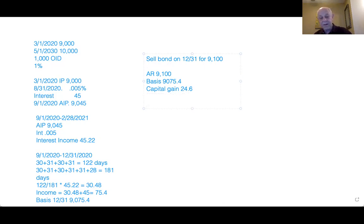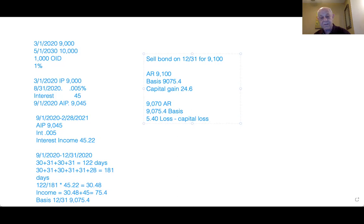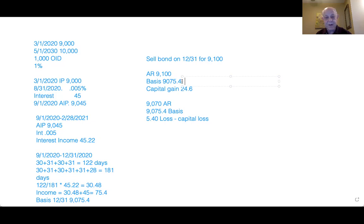If I sold the bond for $9,070, my amount realized is $9,070 and my basis is $9,075.40 — I'd have a capital loss of $5.40. That's a bad result because the loss is a capital loss, and if I don't have capital gains I can't deduct it. But I still had to accrue all the interest income as ordinary income regardless. That's the trade-off with OID bonds.